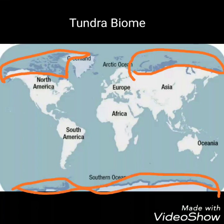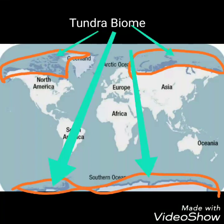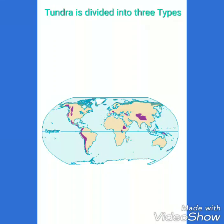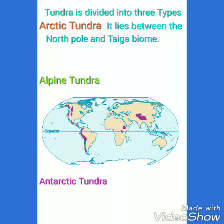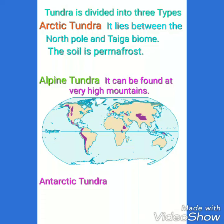The tundra biome is also found around the Antarctic Ocean. The tundra biome can be divided into three types: arctic tundra, alpine tundra, and antarctic tundra. The arctic tundra lies between the north pole and the taiga biome, and one characteristic of arctic tundra soil is permafrost.